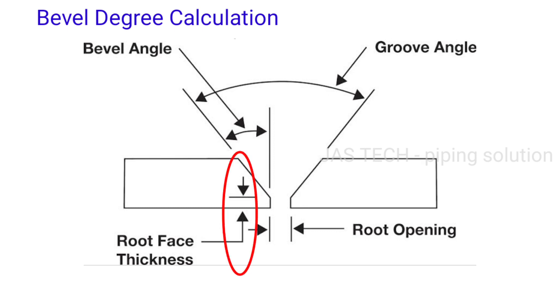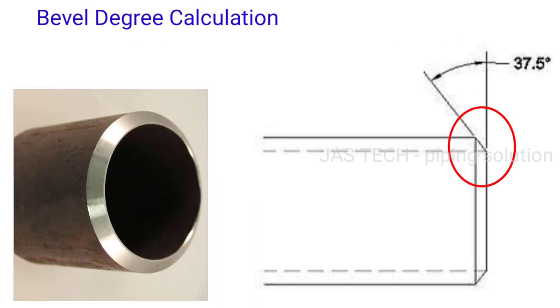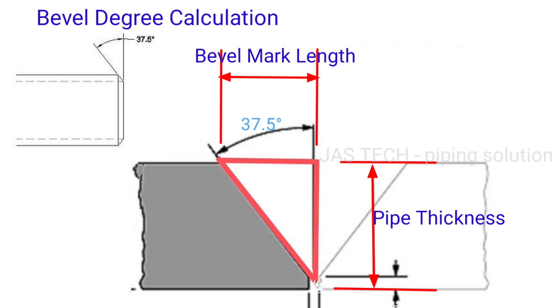Normally pipe bevel angle is 37.5 degrees. Bevel degree calculation is the same as trigonometry calculation.